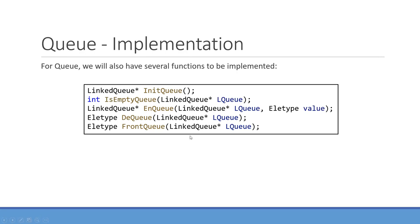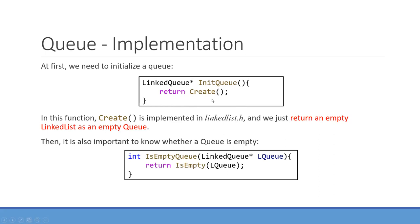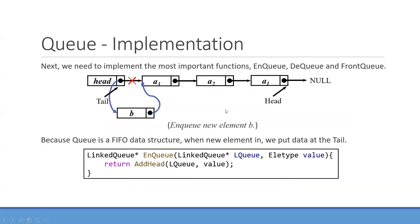For the implementation, first we implement the initQ function by calling the create function from the linked list, which returns an empty linked list as an empty Queue — it simply generates an empty head node and returns it. For isEmptyQ, we utilize the isEmpty function from our linked list. We just check whether we only have one head node and return the result. These are two basic functions. Then we will talk about the more complex functions: enqueue, dequeue, and frontQ.